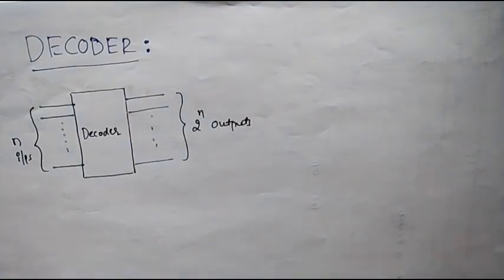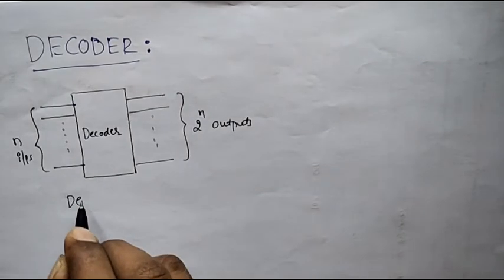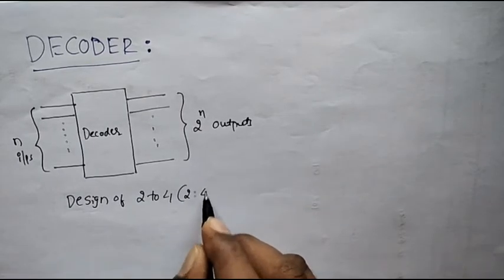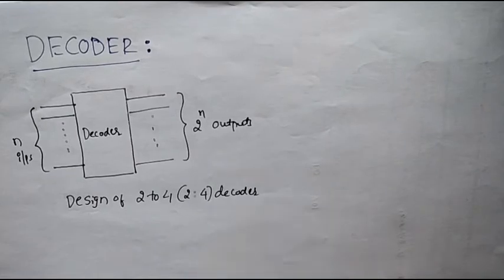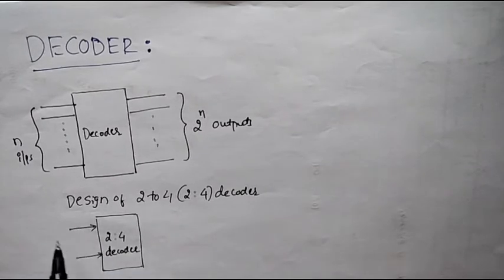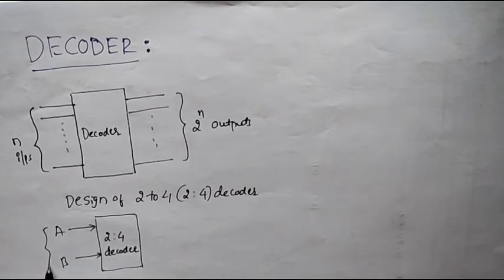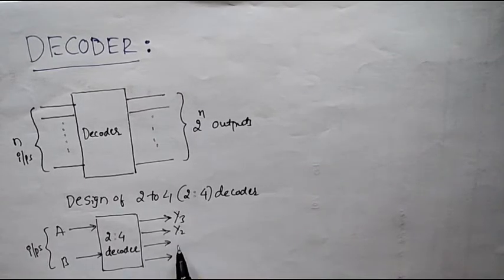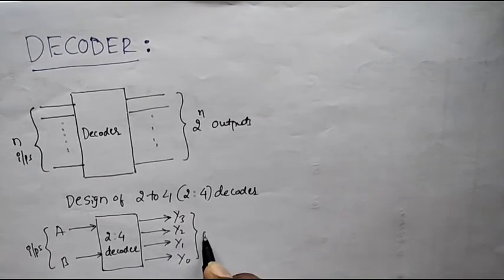Now let us see how to design a 2-to-4 decoder. Let us draw the block diagram of a 2-to-4 decoder. It has 2 inputs, say A and B, and 2 raised to 2, which is 4 outputs, say Y3, Y2, Y1, and Y0.